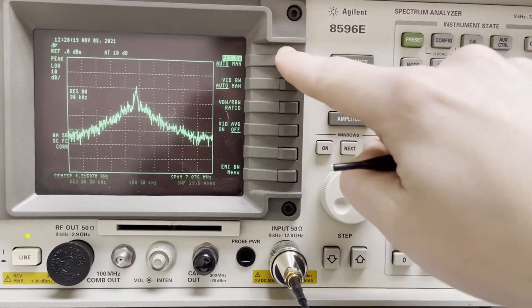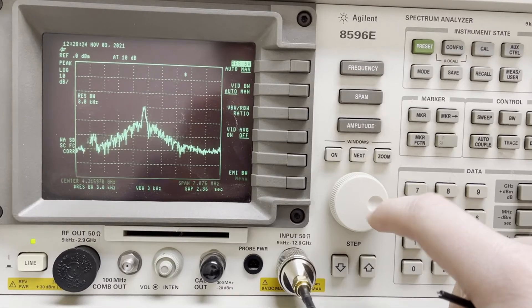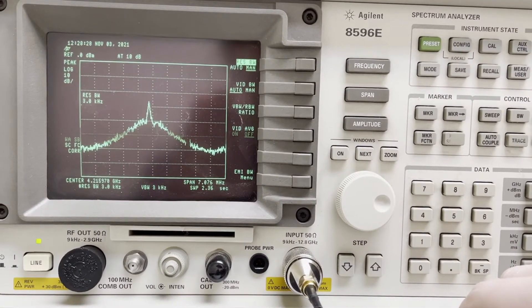So what I can do now just to make this look prettier is switch into manual resolution mode, and we can turn that down and start to see our coherent peak from our offset phase lock.